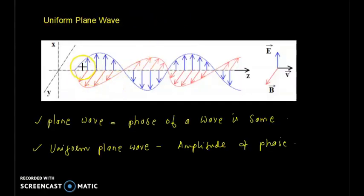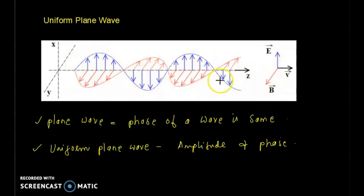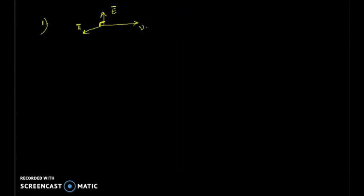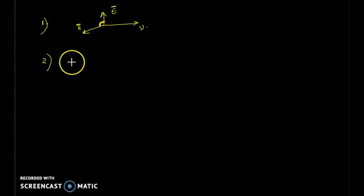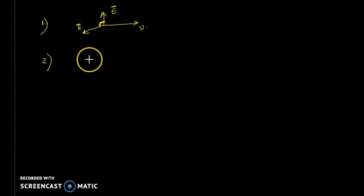Looking at this figure, we can see that there is a particular frequency at which both fields are oscillating. The second property of a uniform plane wave is that the fields vary harmonically with time and at the same frequency everywhere in space. The frequency should be the same.